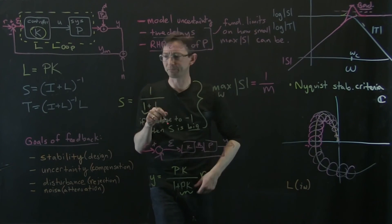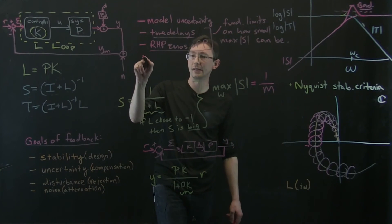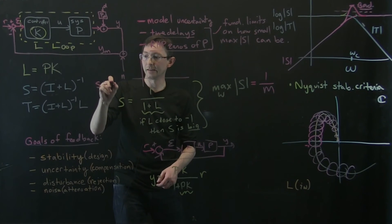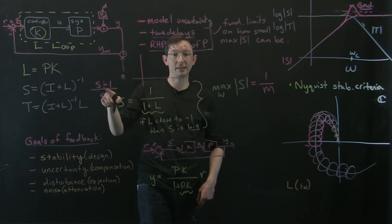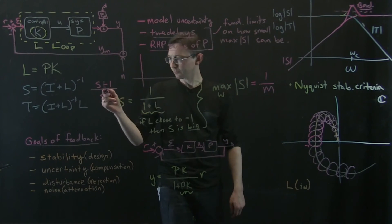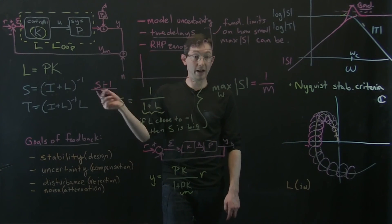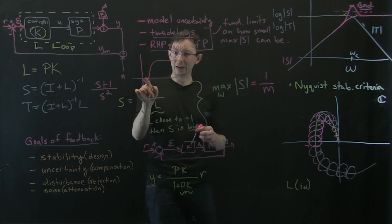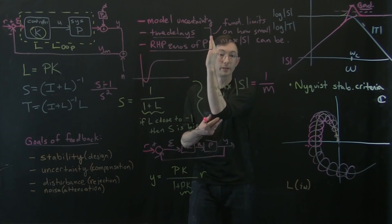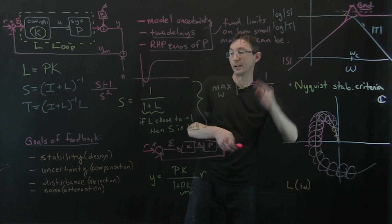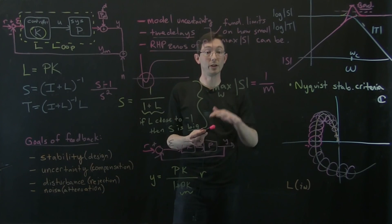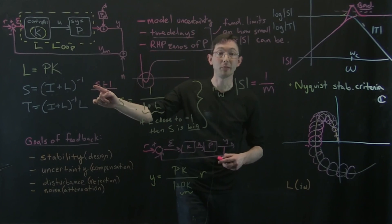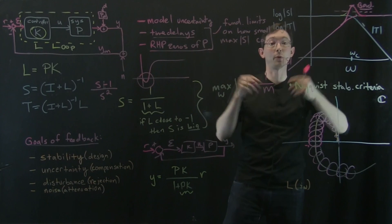A right half plane zero — I'll probably have a video on this — would be something like (s − 1) over s², a transfer function with a zero of the numerator in the right half plane. If I do a step response of a system with a right half plane zero, it actually goes in the wrong direction before picking up and going in the right direction. We saw this for the inverted pendulum on a cart: when we wanted it to go in one direction, it actually went the wrong way first. If you ever see this behavior — step the system and it goes the wrong direction first — that's a red flag: you have a right half plane zero and a fundamental limit on how high your bandwidth can be before losing robustness.